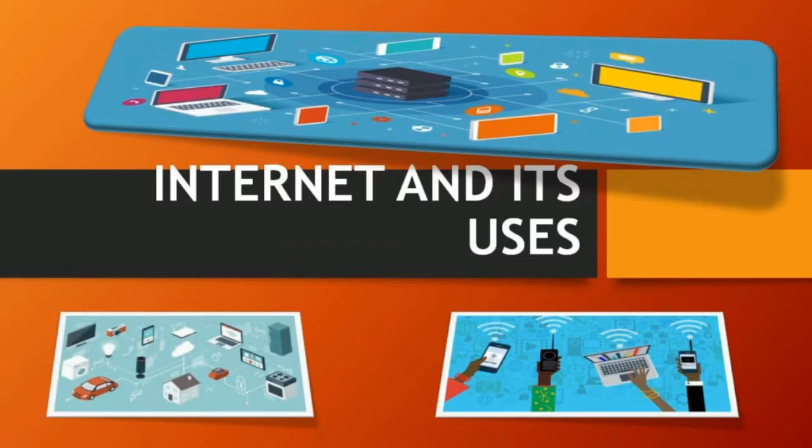Hi students, today we are going to see standards of computer science. The lesson name is Internet and its Uses. Let us move to the video session. Chapter 6: Internet and its Uses. In this chapter we are going to study how the internet is used for various purposes.